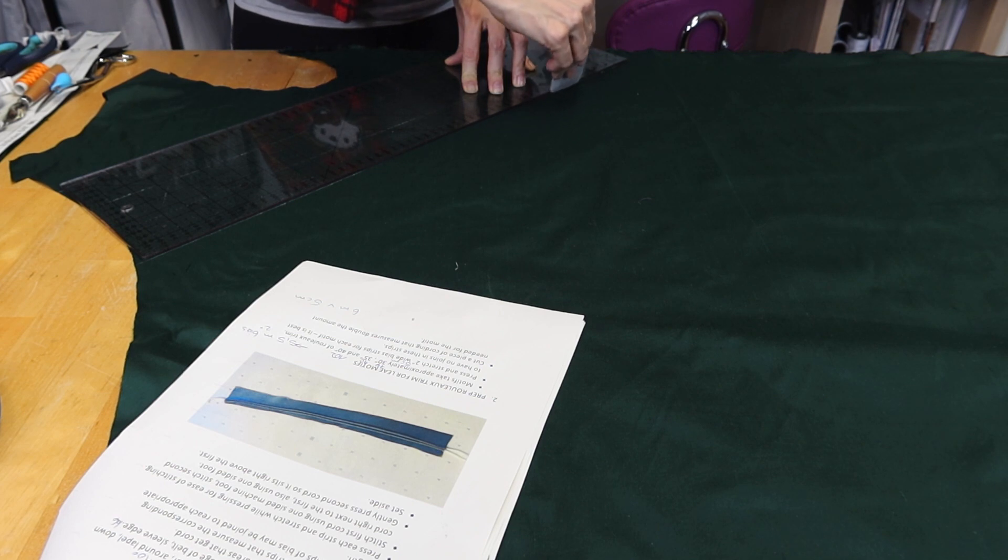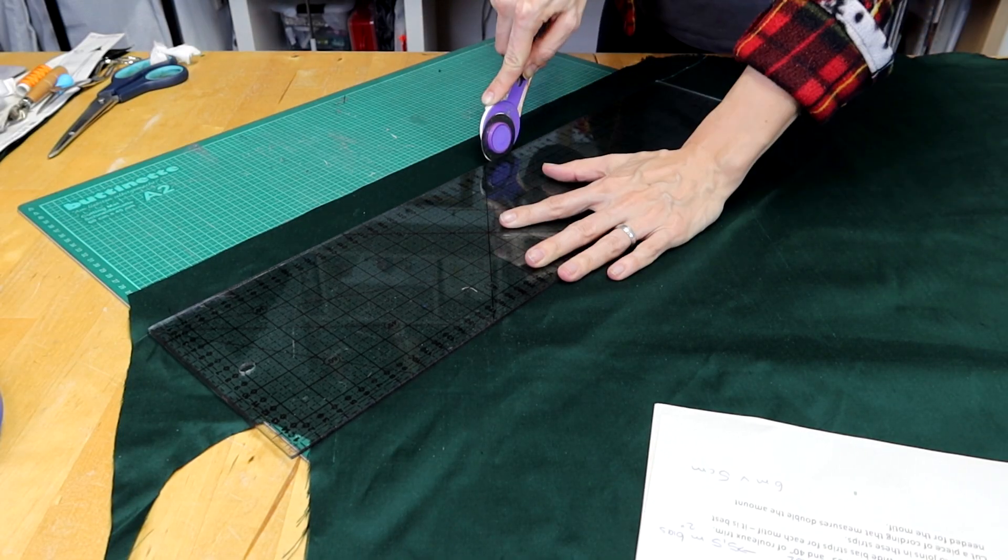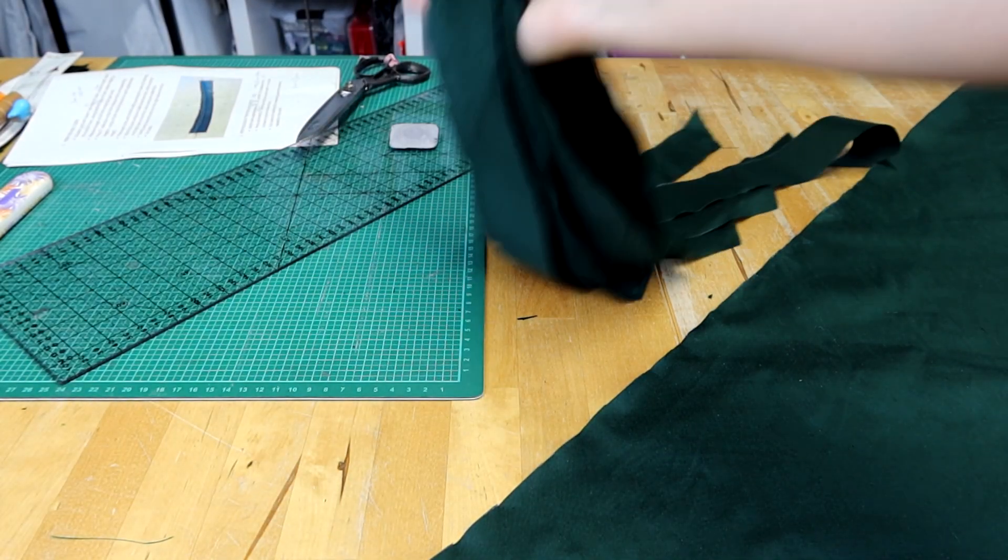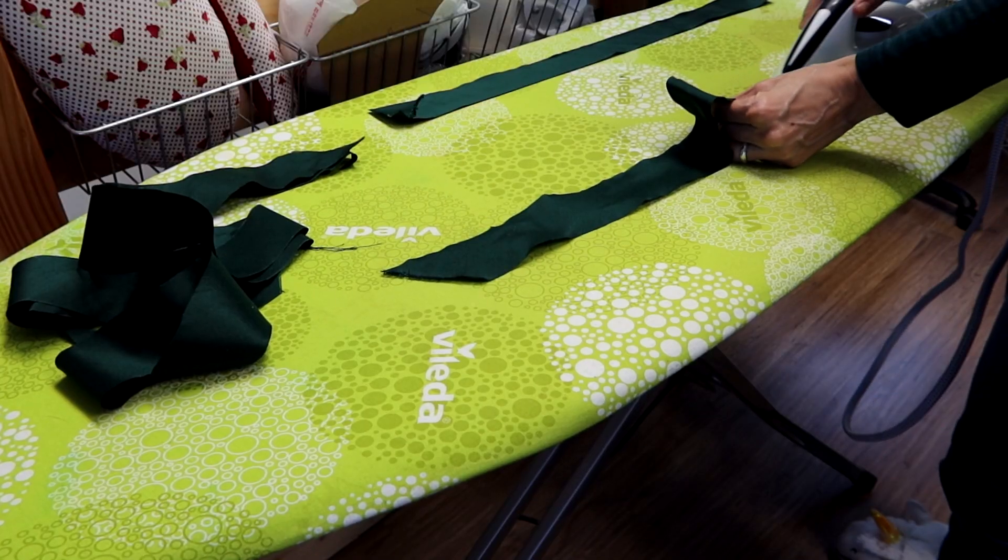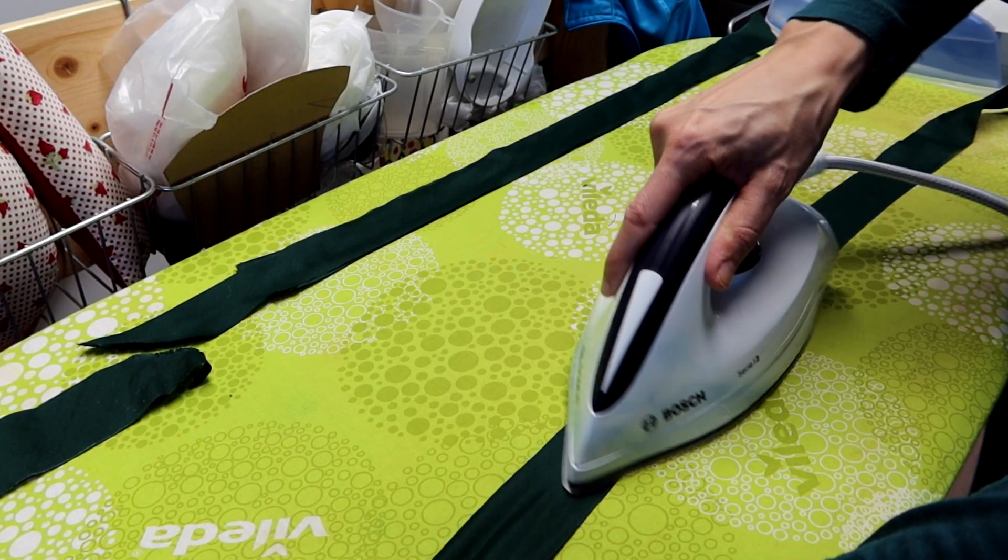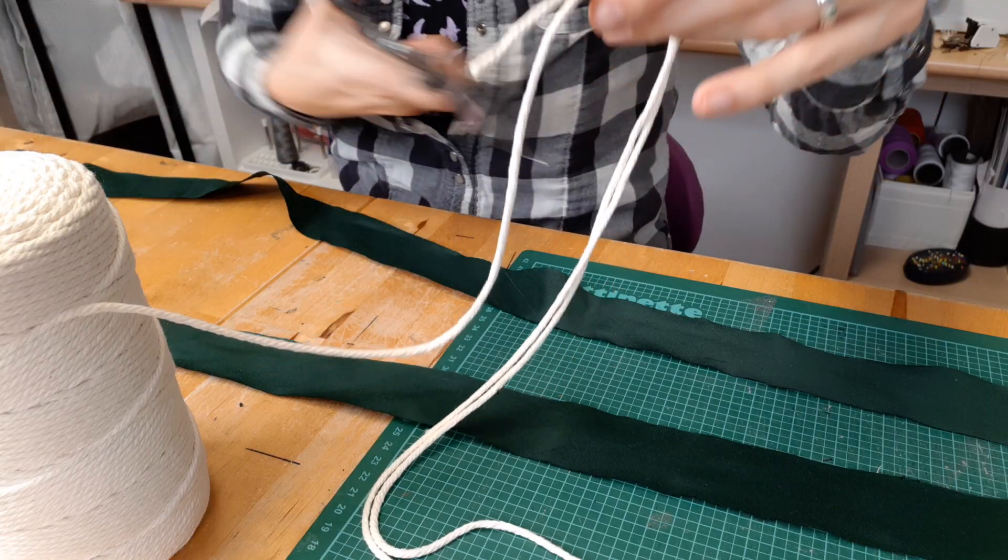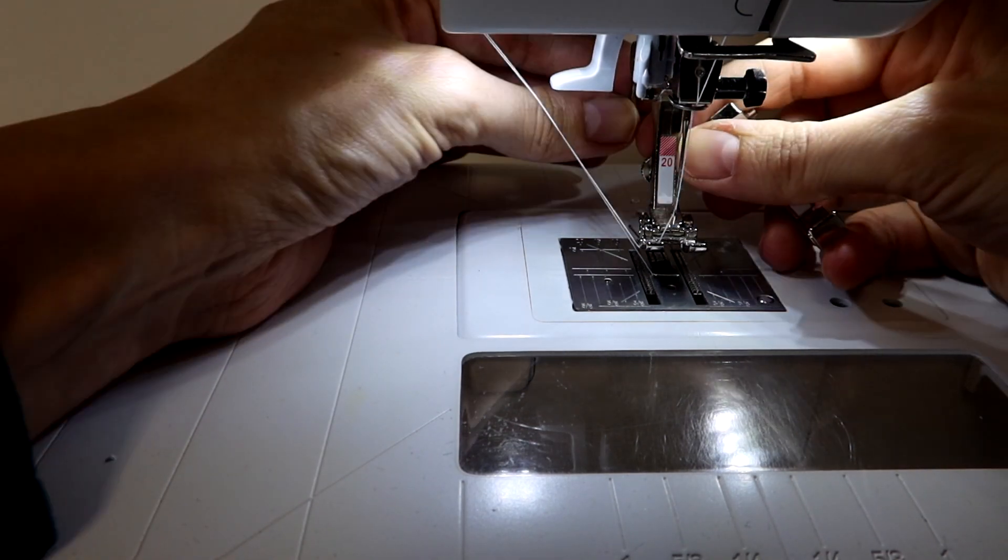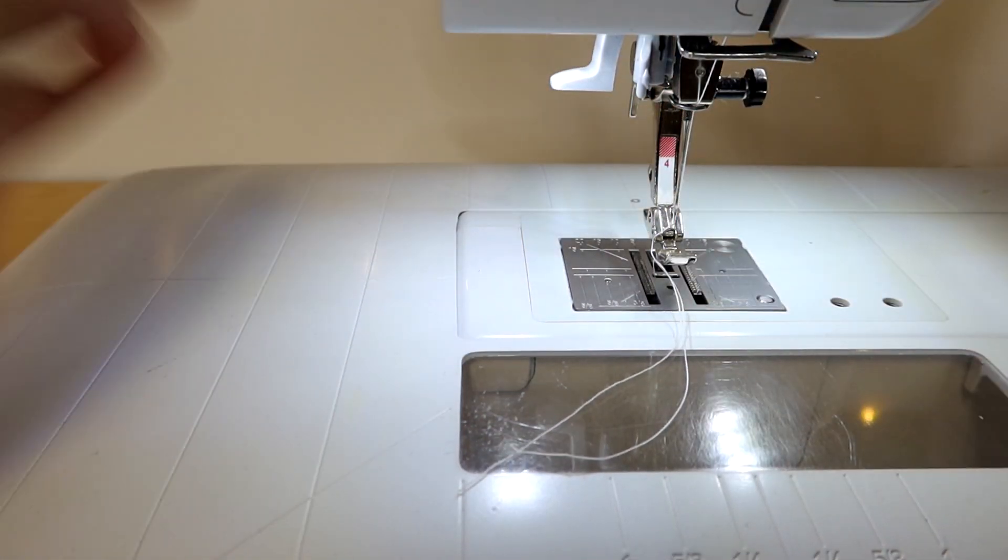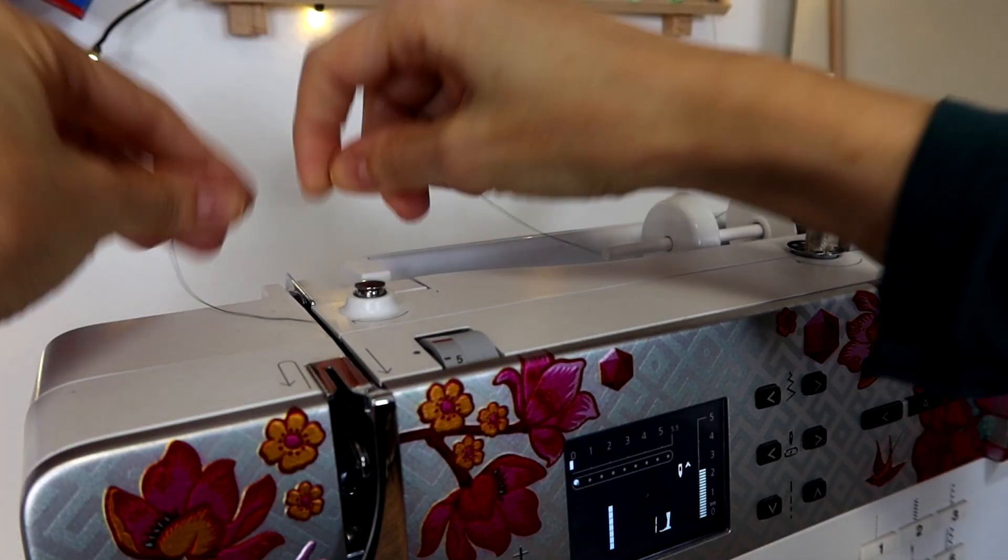The first step was to cut a lot of bias strips for the double piping and the rouleau trim. I pressed them stretched to prevent puckering. After that I prepared the cord for the piping. I needed two lengths of cord for one piping piece. I stitched the piping with a zipper foot and after that I sewed the second cord next to the first.